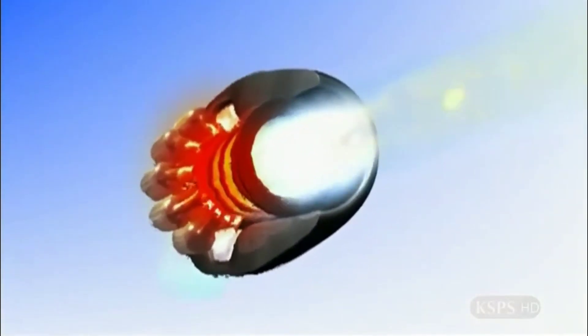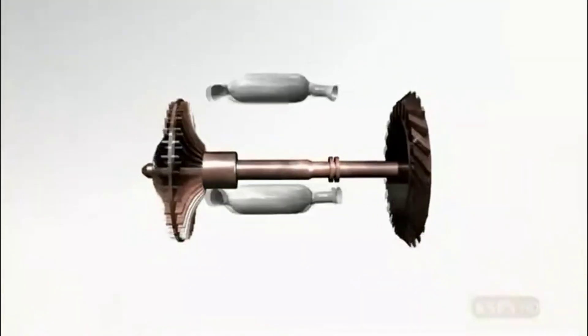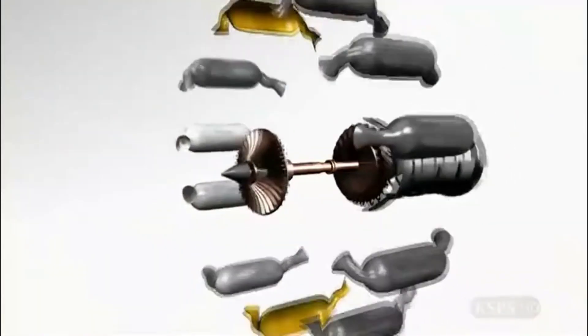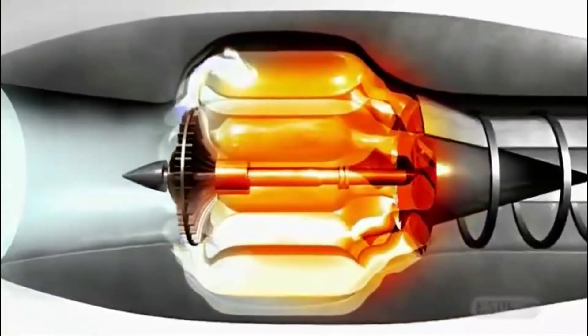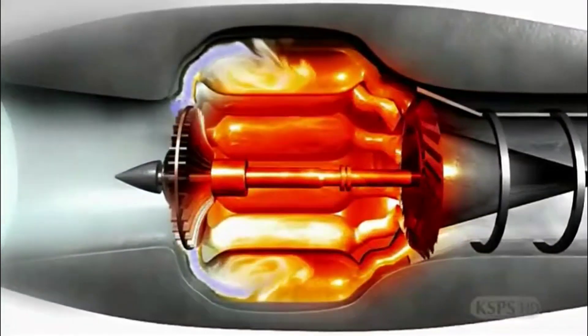The concept was ahead of its time. The Whittle approach used one large compressor disc at the front of the engine. The disc forced air outwards centrifugally into combustion chambers that encircled the central disc.